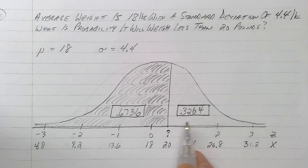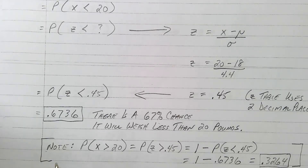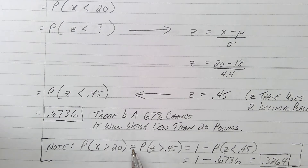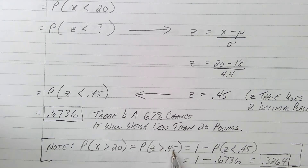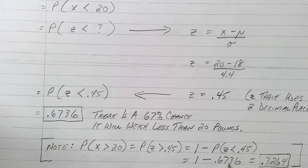If they ask less than, you look up area to the left. If they ask more than or greater than, you calculate area to the right by subtracting from 1. You can't look up area to the right directly in the table — you find less than in the table and subtract it from 1. So I looked up to the left of 0.45, that was 0.6736, and subtracted it from 1 to get the area to the right.